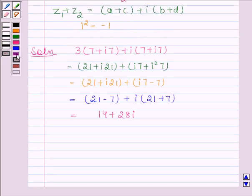We have expressed the given complex number in the form A plus iota B, where A equals 14 and B equals 28. This is our required answer. Bye and take care. Hope you have enjoyed the session.